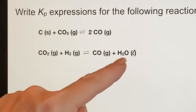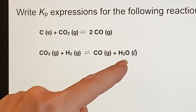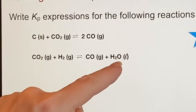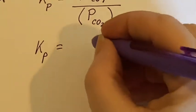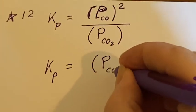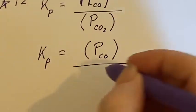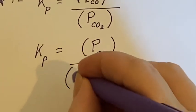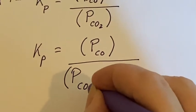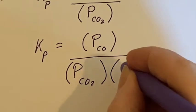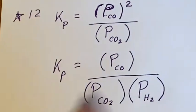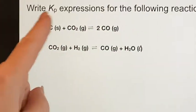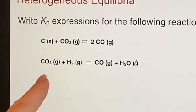Now, if this was water vapor, it would end up appearing in the expression, but it is not. It is listed here as liquid. So K sub P for this one. The only thing that counts on the products is the pressure of the carbon monoxide. And then when we have the reactants, we have the pressure of the carbon dioxide and the pressure of the hydrogen gas. And that takes care of how to write those in a heterogeneous situation.